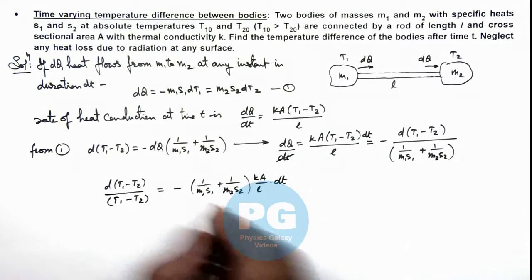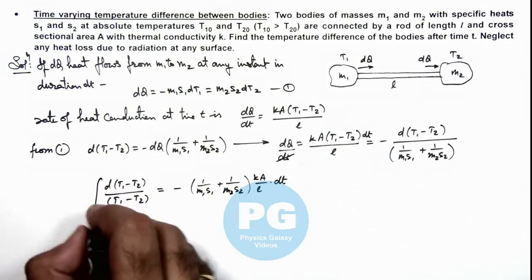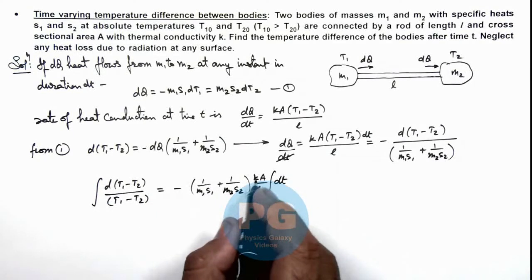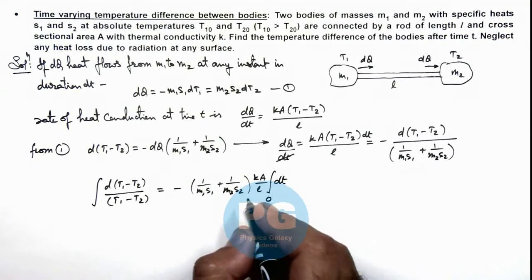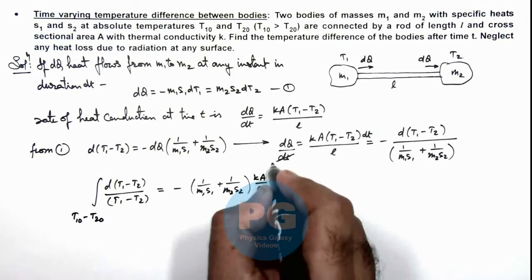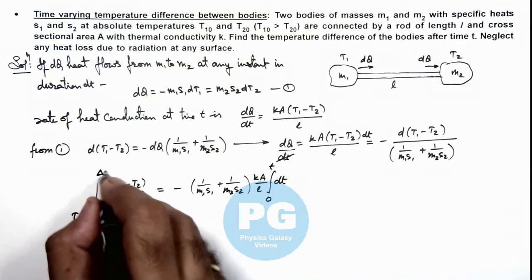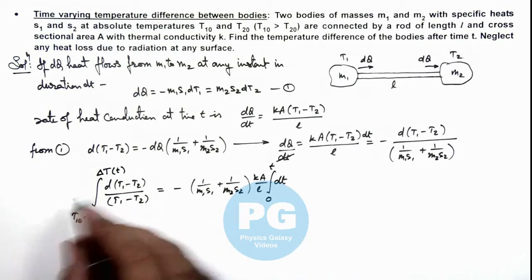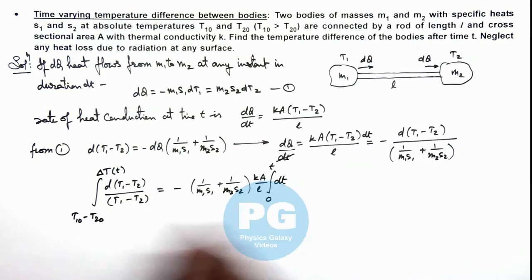Now we can integrate both these sides. If left side and right side are integrated as all these values are constant, at t equal to zero the temperature difference was given as T₁₀ - T₂₀, and at a general time the temperature difference is ΔT as a function of time, which we are required to calculate. We can integrate and get it.